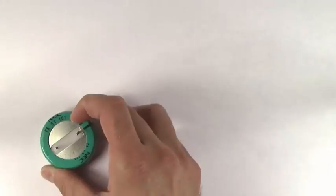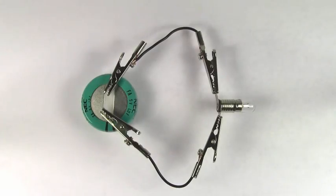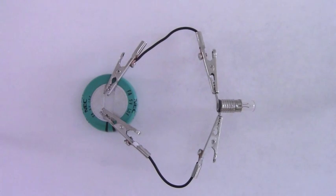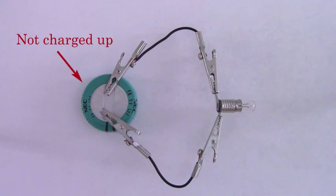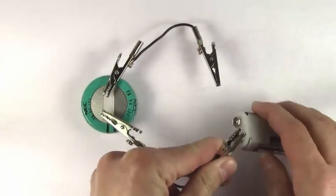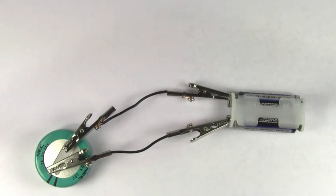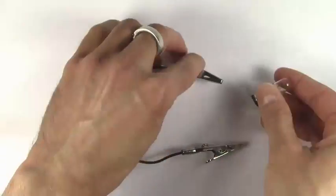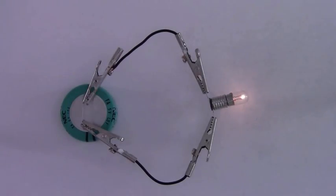Check out this capacitor. Look at what happens if I hook it up to this light bulb. Nothing happened because the capacitor is not charged up. But if we hook it up to a battery first to charge up the capacitor, and then hook it up to the light bulb, the light bulb lights up.